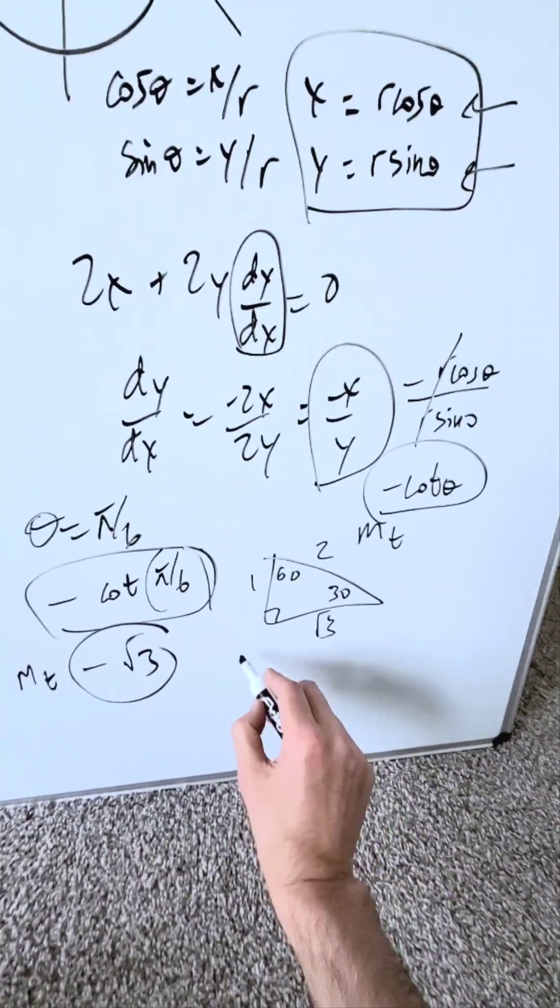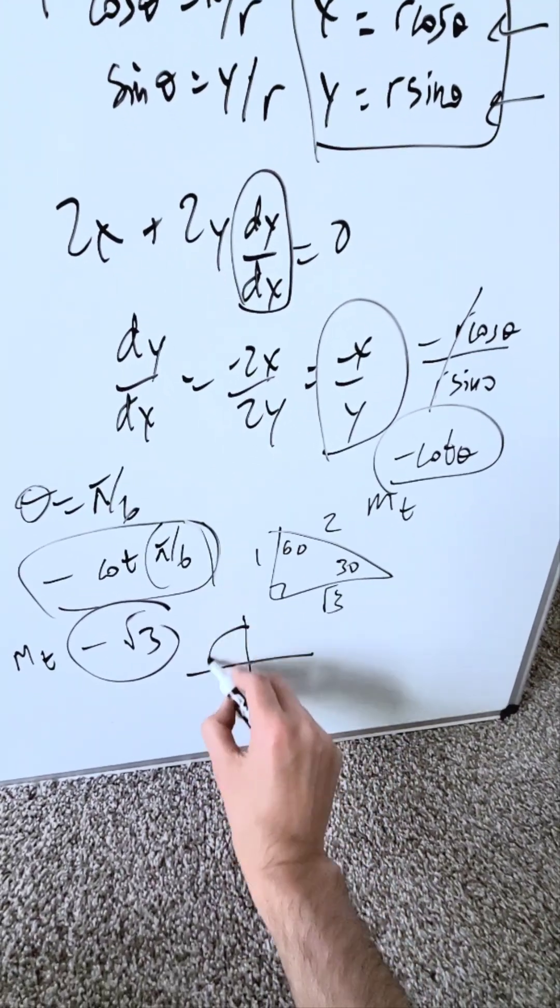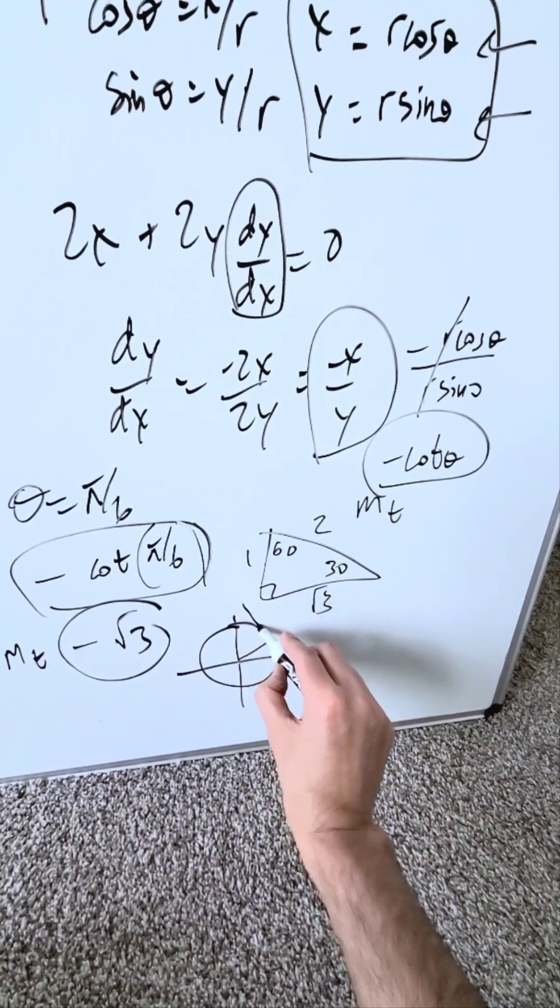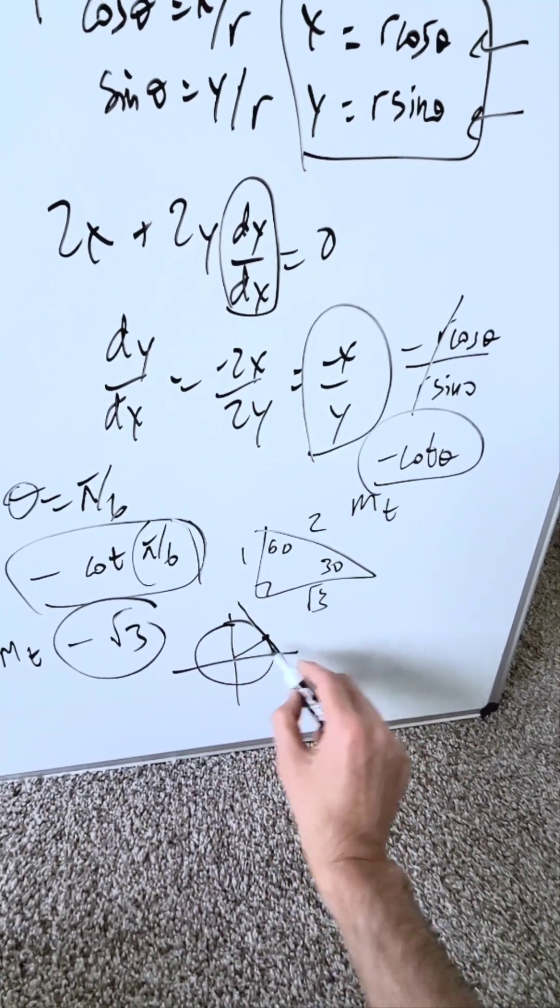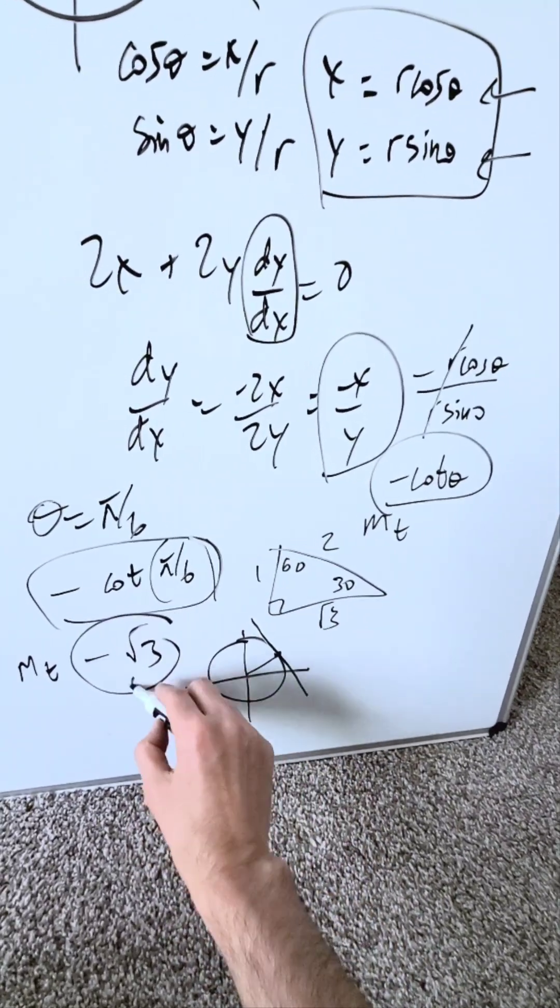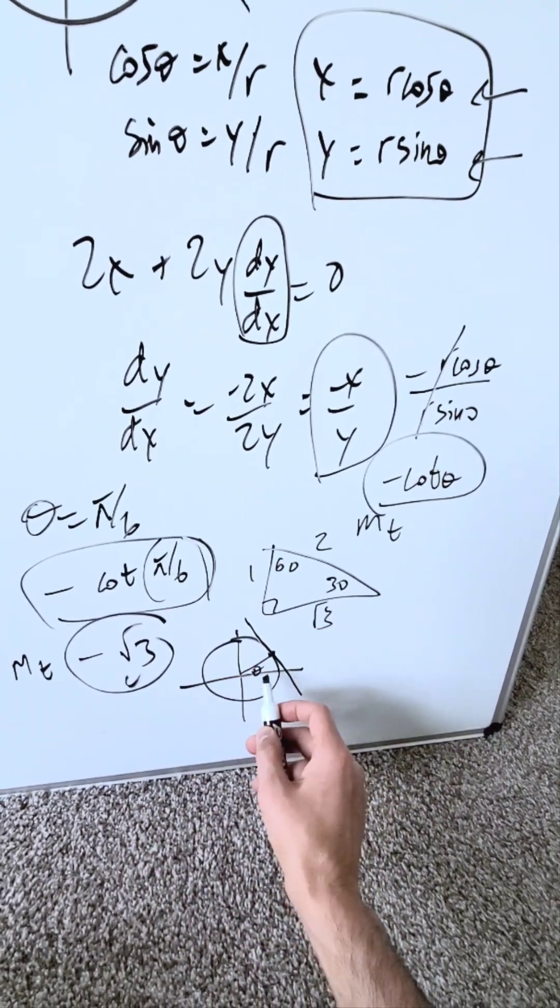How can you interpret this graphically? Here is my unit circle. Assume you have 30 degrees right over here. Draw a tangent line. The slope of this right here, tangent line would be minus root 3. Incline downwards, relatively steep. It would be a good value here. Angle 30, pi over 6.